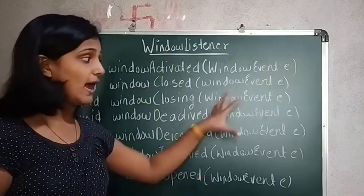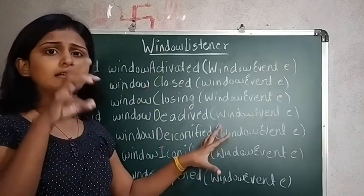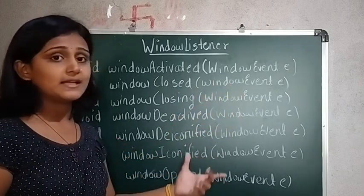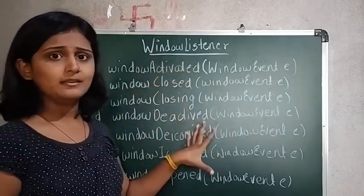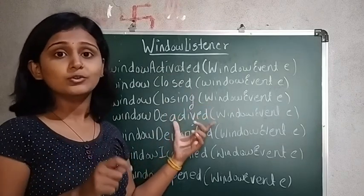So these are the methods. That means as per the requirement you have to give or have to perform the actions in the curly braces by using this method. Even if you wanted to use a few methods of this window listener, then too you have to override all the methods compulsory.